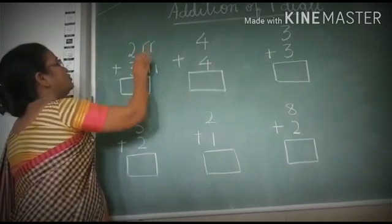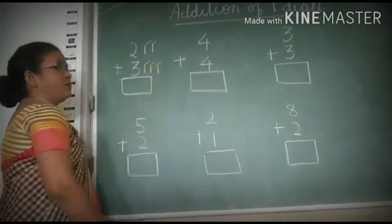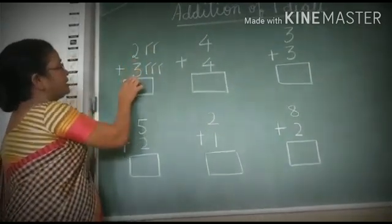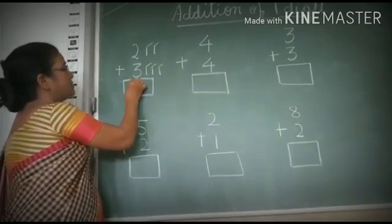You will draw here 3 lines and count all together. 1, 2, 3, 4, 5. So 2 plus 3 is 5.